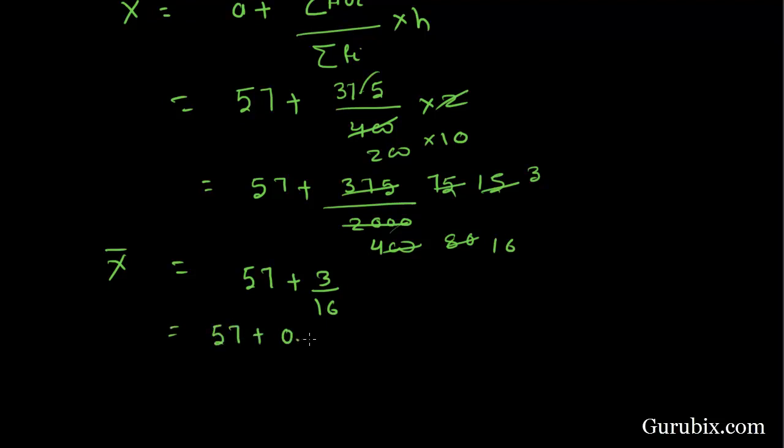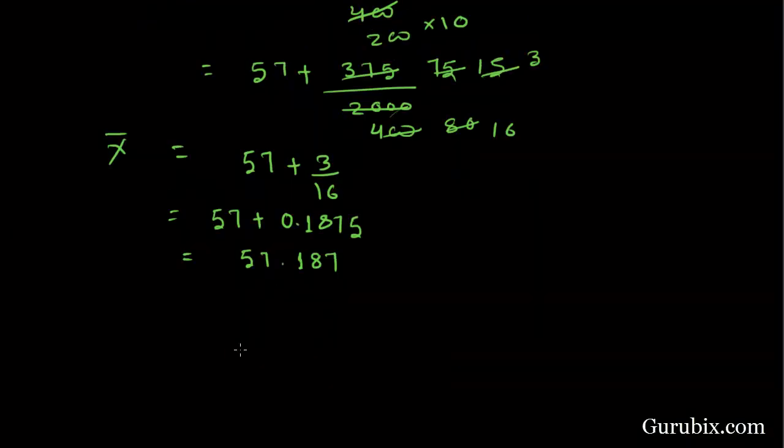57.1875 is equal to 57.19. Hence, required mean is 57.19.